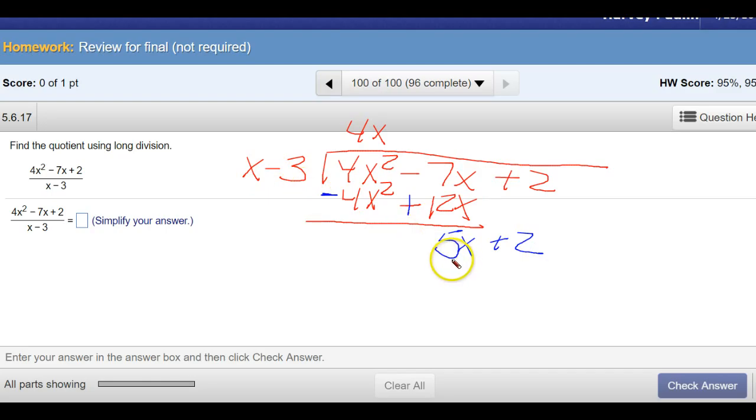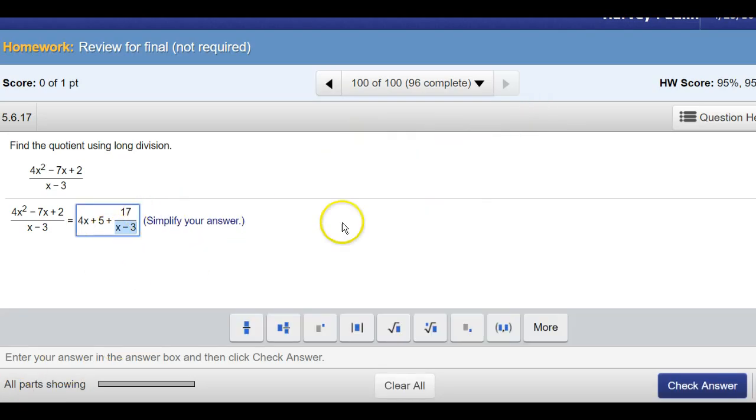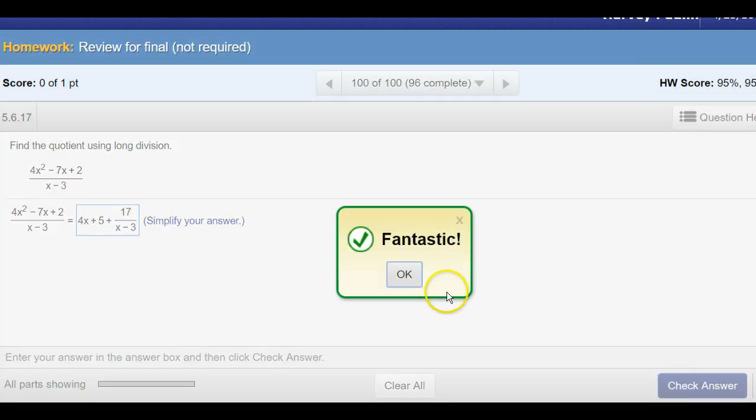x plus 2. Now, x goes into there how many times? Five times. x times 5 is 5x. This is a negative 15. Change our signs. Change our signs. And this becomes a 17. So, for this one we have a remainder. We would put it in this way. Plus 17 over x minus 3. And that should be our answer. And we've put it in there. And we get to check our answer. And we did well.